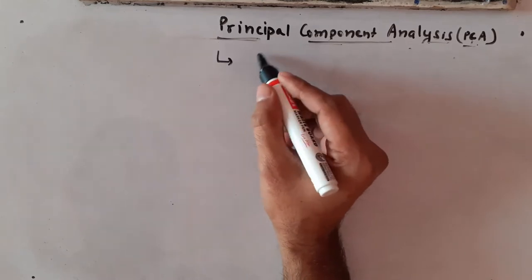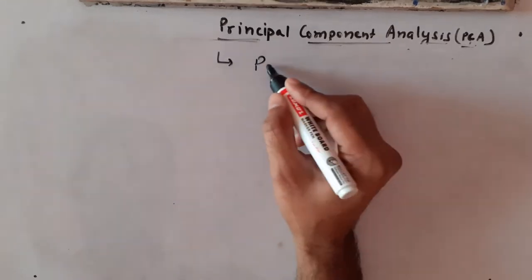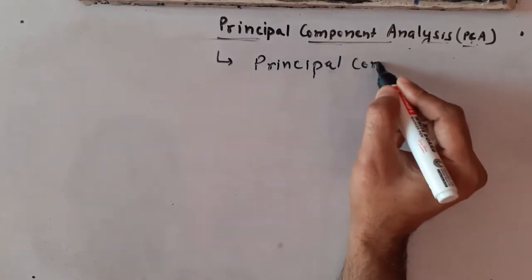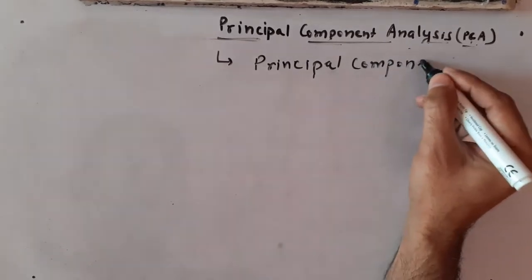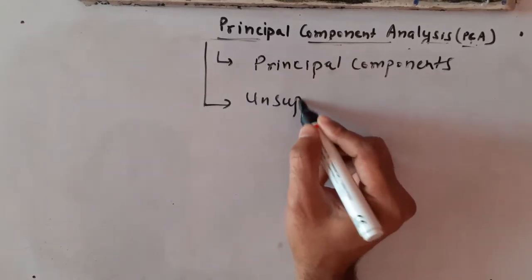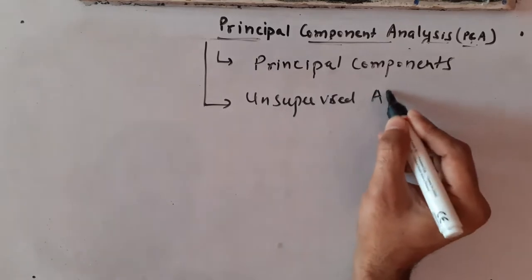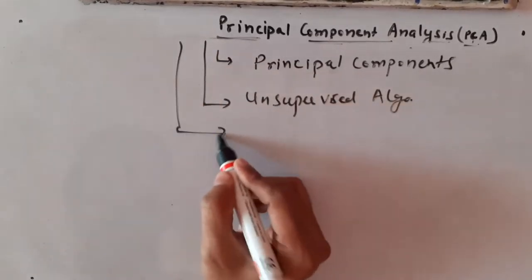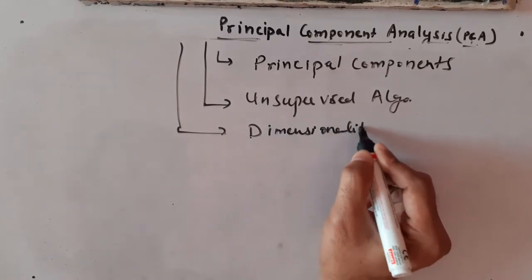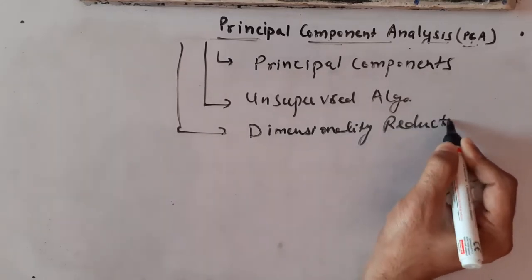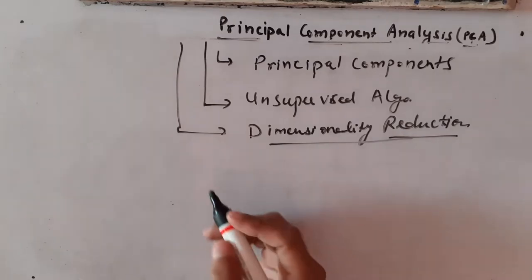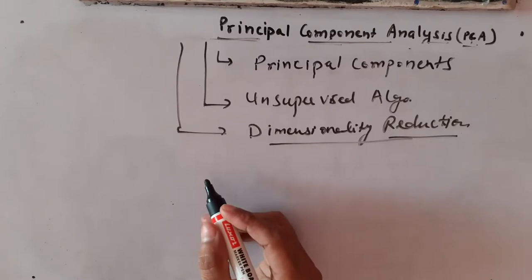In this algorithm we calculate principal components, and PCA is an unsupervised algorithm. The third key point is that it is used for dimensionality reduction.